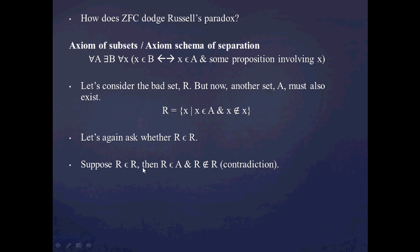And we can see that this assumption, R being an R, leads to a contradiction. And again, since R being an R leads to a contradiction, we conclude that R is not an R. And since R is not an R, that means one of these two propositions, either this one, x being an A, or x not being an x, has to be false.